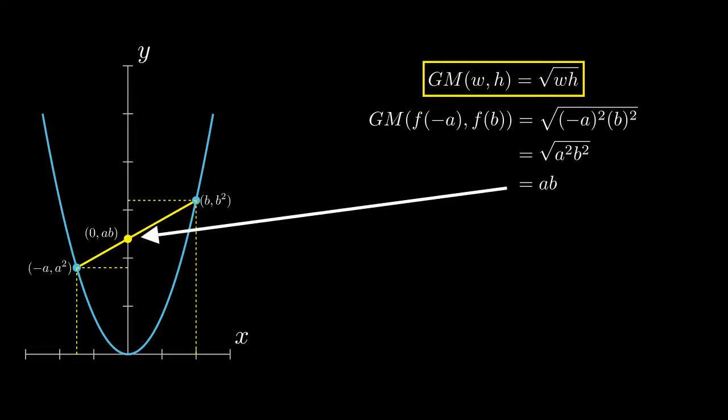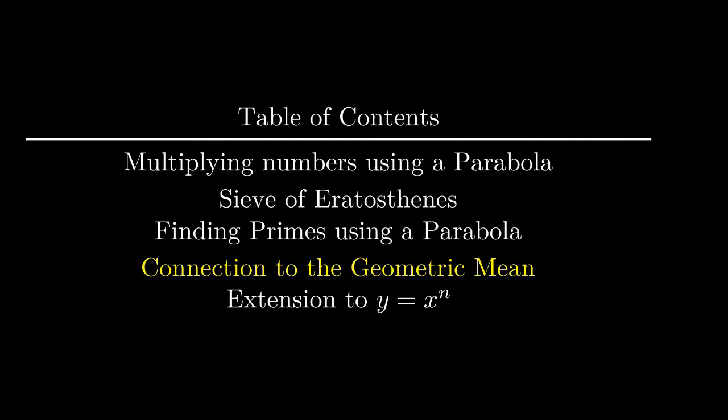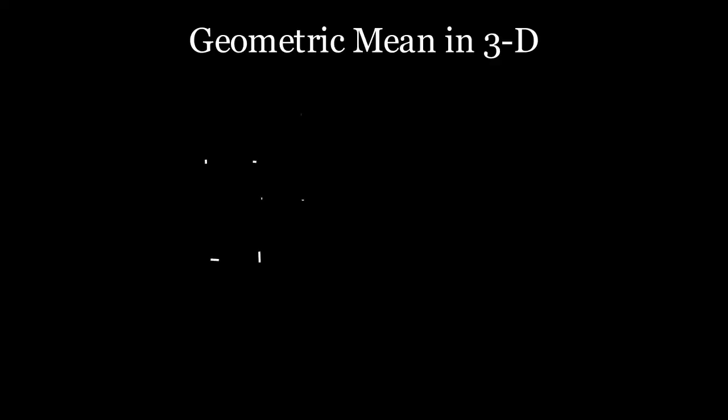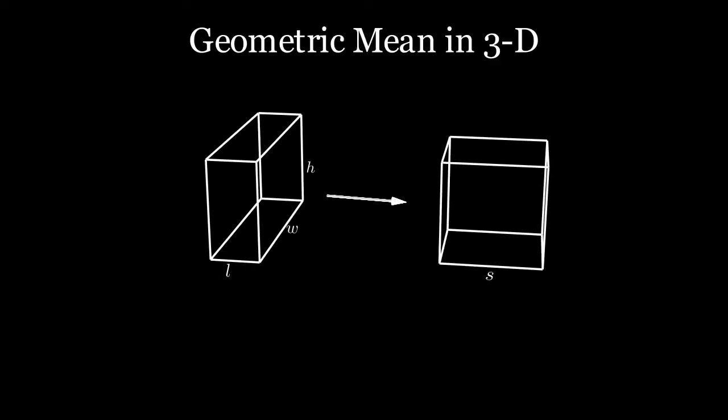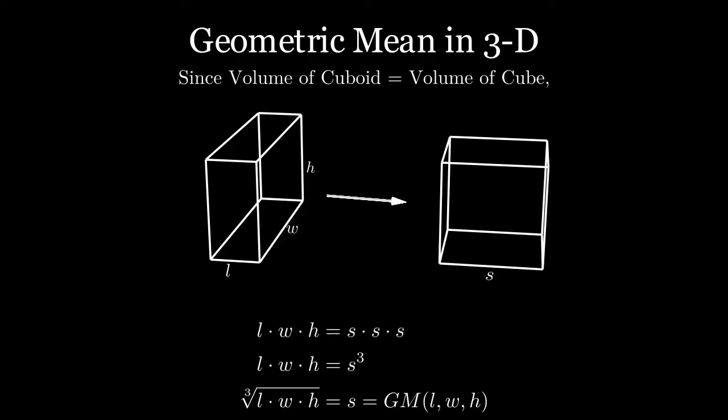Now we can also talk about the geometric mean of three dimensions, but instead of rectangles and squares, we now talk about cuboids and cubes. Also, instead of area, we will have to consider volume. As we can see, the geometric mean for three dimensions takes the product of the three inputs and takes the cube root instead of the square root.